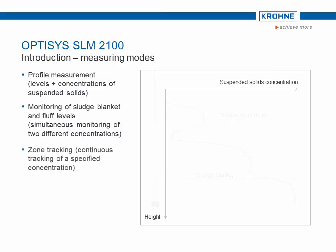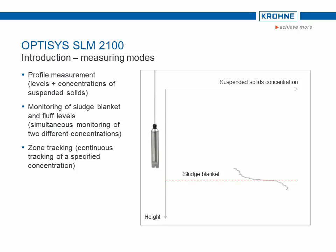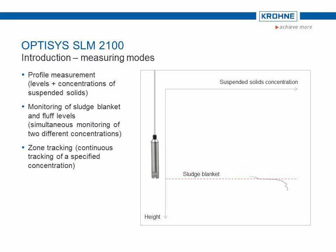With the third measuring mode, the zone tracking mode, a specific concentration level is continuously tracked. The sensor moves up and down slightly in the area of the particle concentration to be tracked and thus constantly identifies the current position of the target value. In this way, any change in the level — for example during de-pumping — can be continuously tracked.